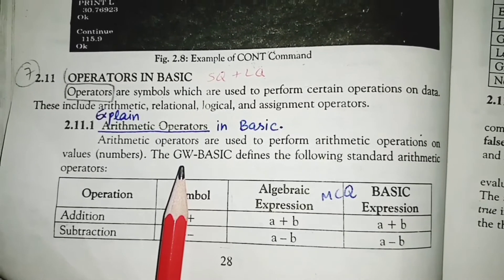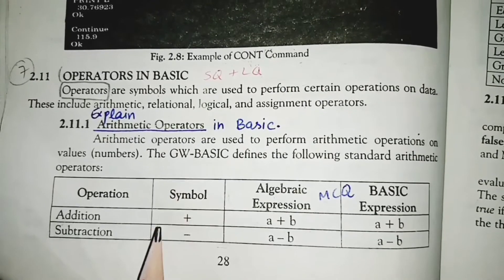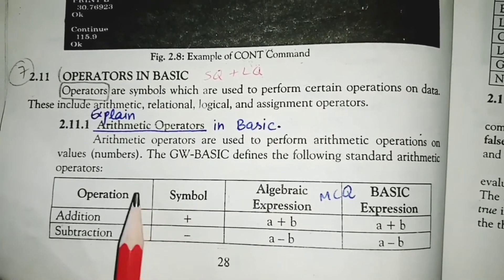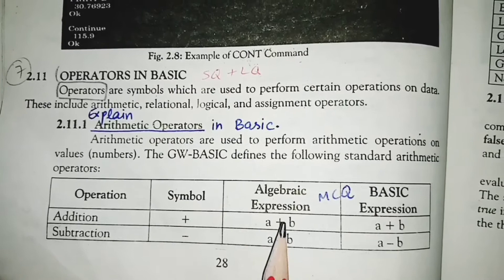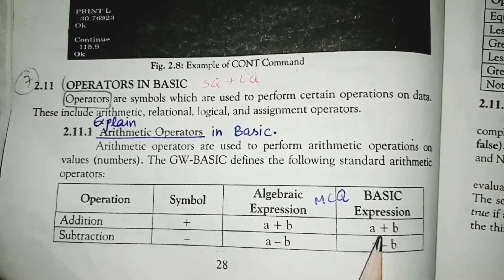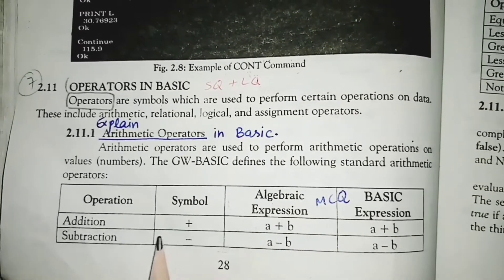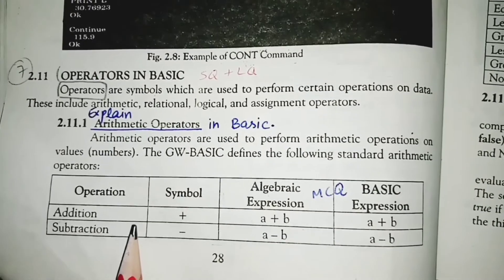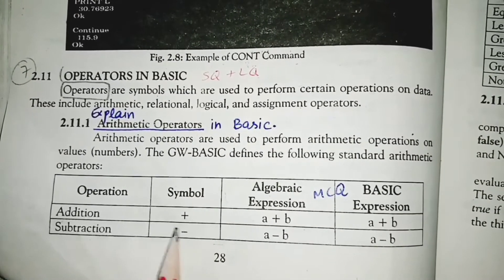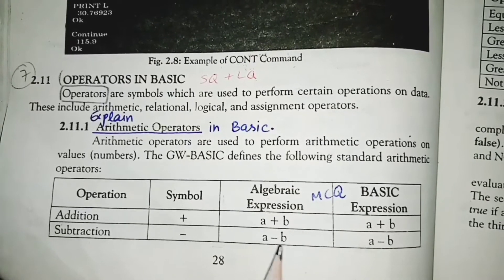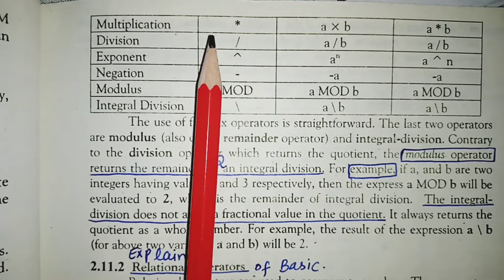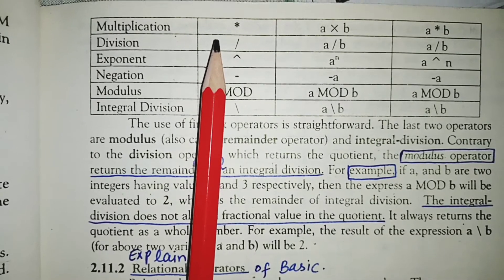The first arithmetic operator is addition. The symbol for addition is plus. The algebraic expression is A + B, and in BASIC it is also written as A + B. Next is subtraction — the symbol is minus or dash. The algebraic expression is A - B, and the BASIC expression is also A - B.